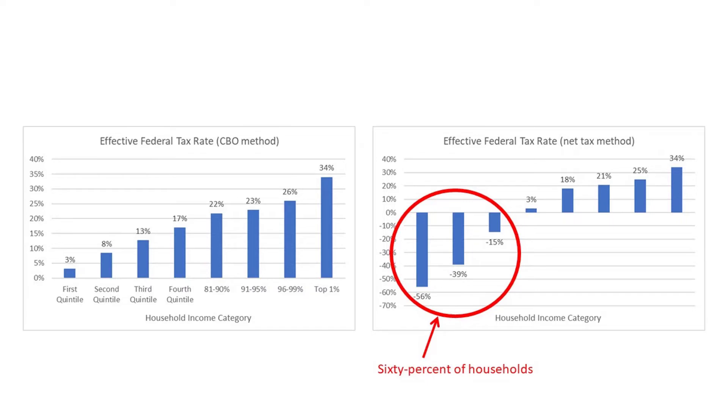So when we hear complaints about tax cuts being tax cuts for the rich, this is why: our tax system has become so progressive that virtually any federal tax cut is a tax cut for the rich, because on average those are the only people who are net payers into the federal fisc. These numbers reveal another disturbing thing: 60% of U.S. households are net recipients of federal money — receiving more back in transfers than they paid in taxes. This becomes very disturbing when we realize we've created a situation where 60% of voters have a vested interest in the government expanding its taxing and spending, because that 60% are net beneficiaries of larger government.